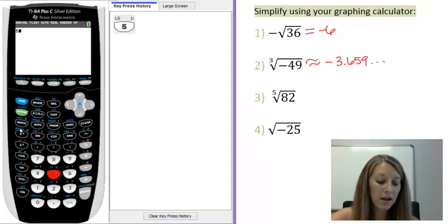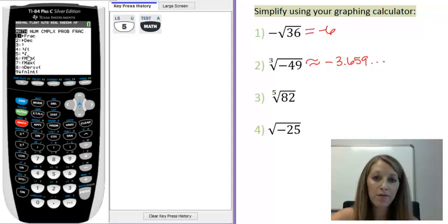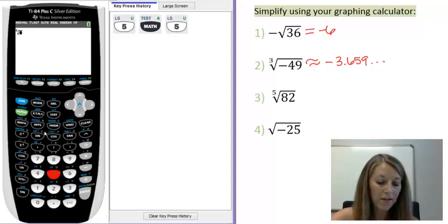So, type in 5, and then I'm going to use math, and I'm going to use option number 5 here, the x root of something. Since I typed in that 5 first, that's going to tell the calculator I want to take the fifth root of it. So, I can scroll down to 5 and hit enter, or just hit 5, and notice it converts it to the fifth root.